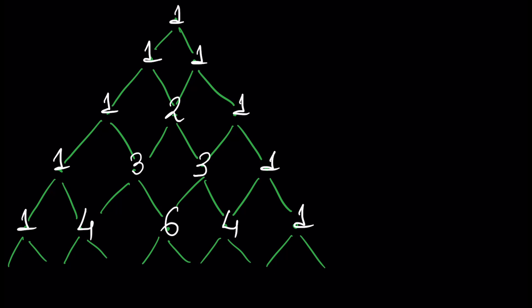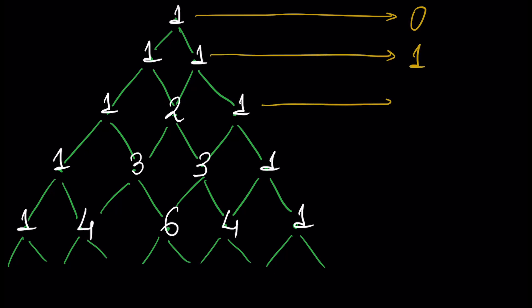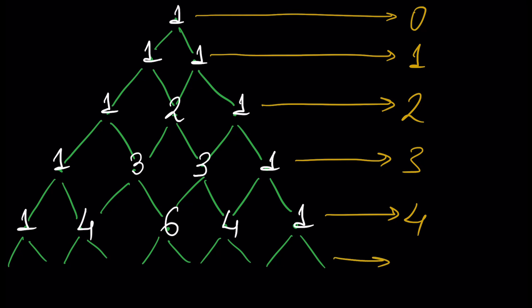Now let's label the levels of our triangle. This top row is level number zero, then level one, level two, level three, level four, and so on — we have an infinite number of levels. What is important to note is that the entries at each level correspond to n choose k values. For example, since this number 1 belongs to level four, it equals 4 choose 0.